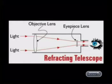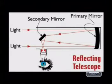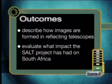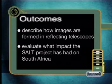As you know, mirrors are also optical devices capable of forming enlarged and diminished images. In the latter part of the 19th century, new technology enabled us to create much larger mirrors than was previously possible, and this opened up a whole new world of possibilities for telescope builders. They decided to replace the converging lenses of refracting telescopes with converging mirrors to build a new kind of telescope called a reflecting telescope. By the end of today's lesson, you should be able to describe how images are formed in reflecting telescopes and evaluate what impact the SALT project has had on South Africa.